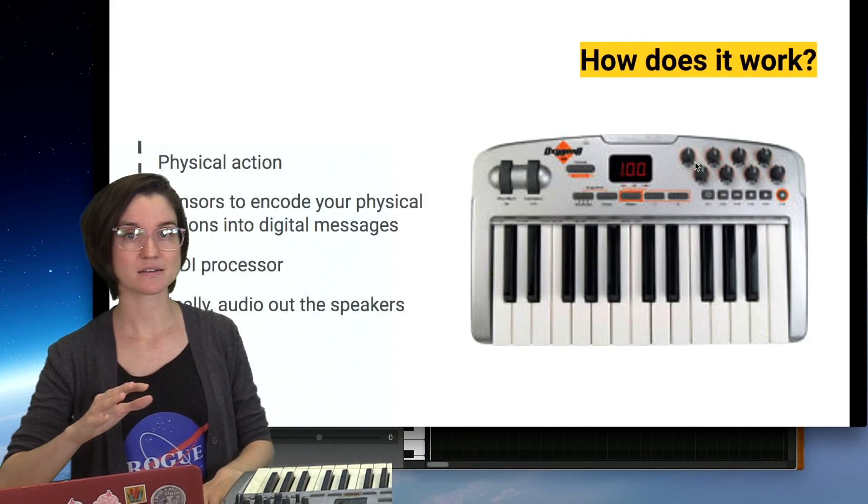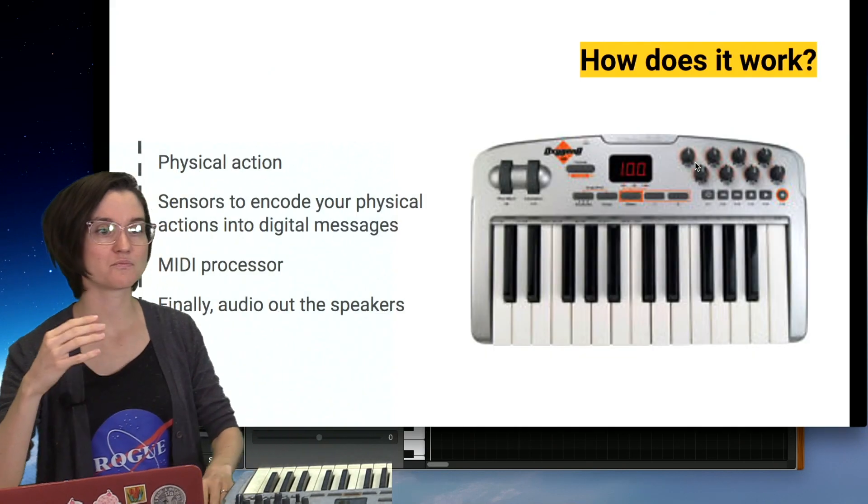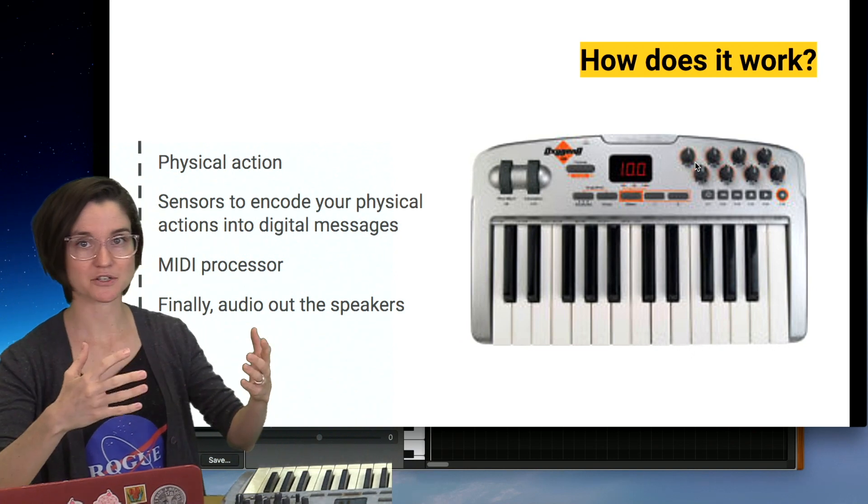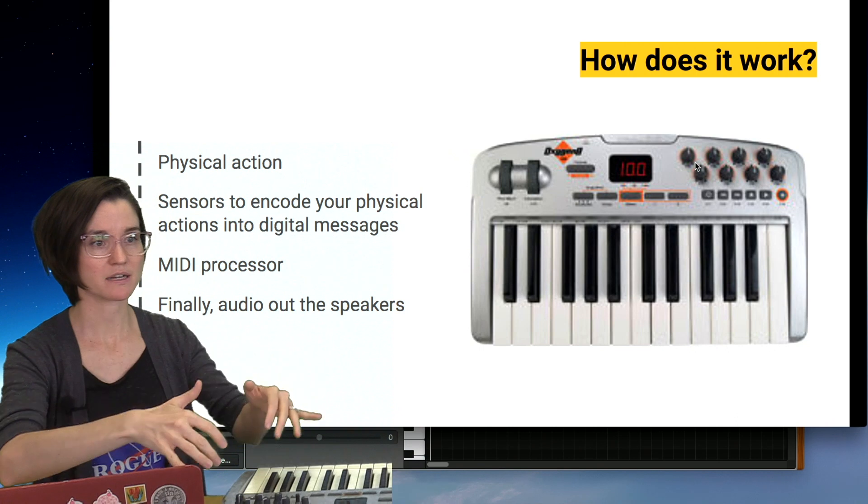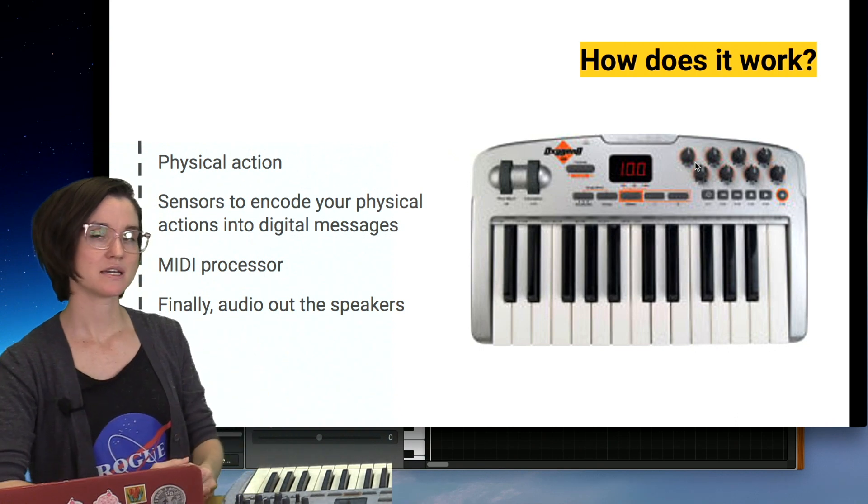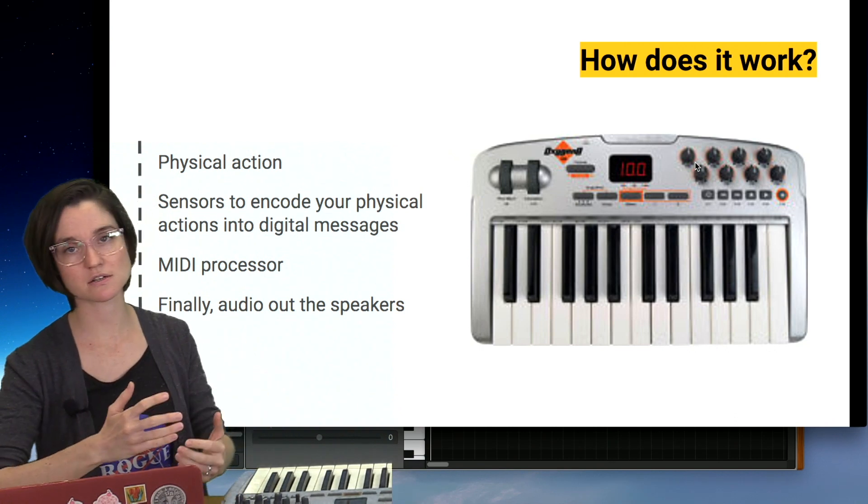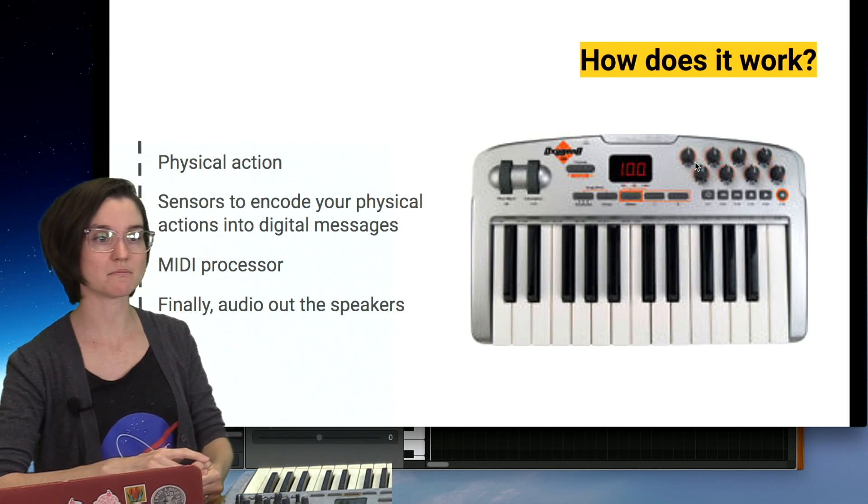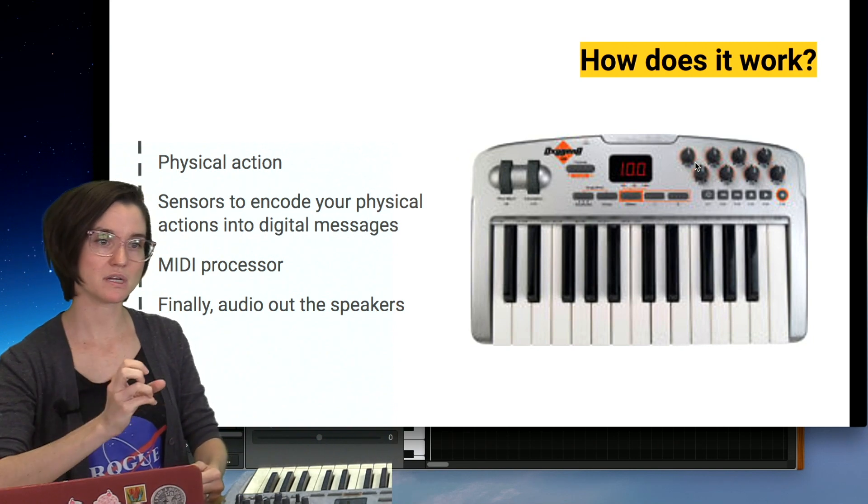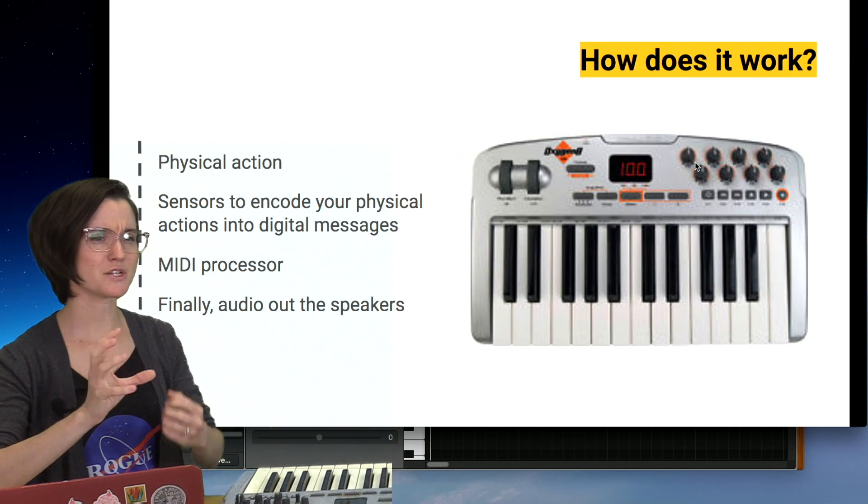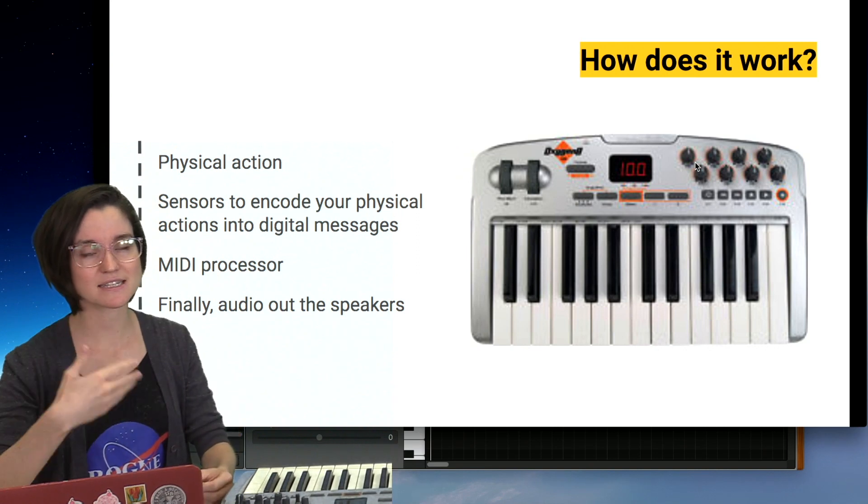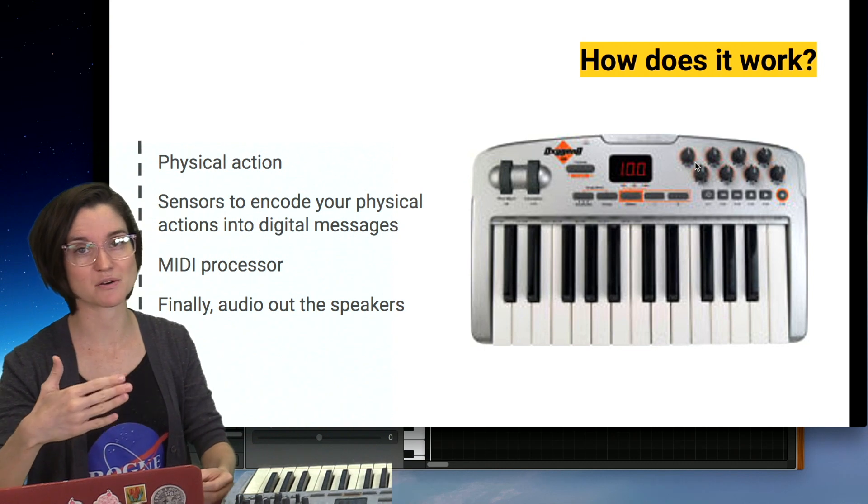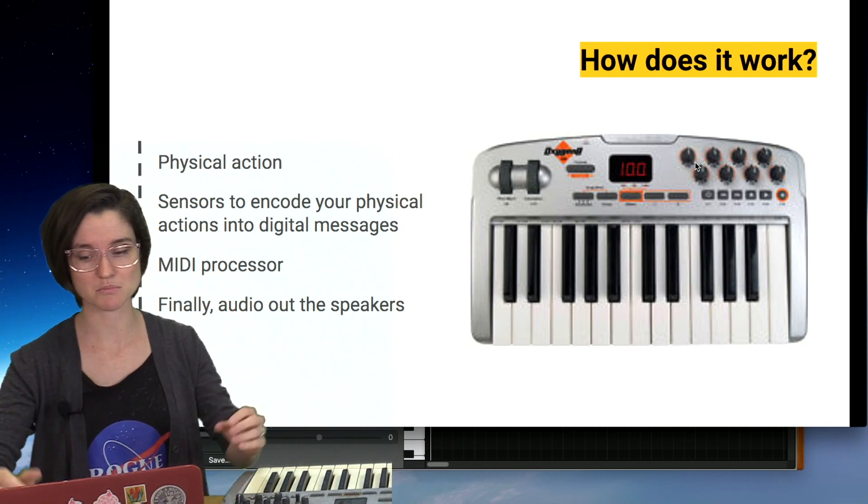So, how does MIDI work? First, we have this physical action, typically of a keyboard or a guitar or a pad, a playing of the music. There's some sensors in the device which encode the physical action into digital messages. Those are sent to a MIDI processor where it interprets all of these different messages and then sends this to audio out our speakers so we can hear the actual music.